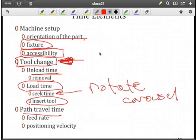And finally, the path travel time for the tool is based upon the feed rate and our positioning velocity to that location, especially with our G00s.